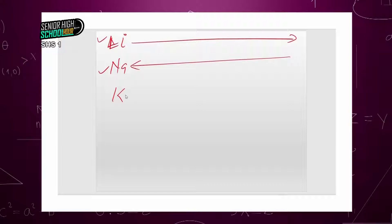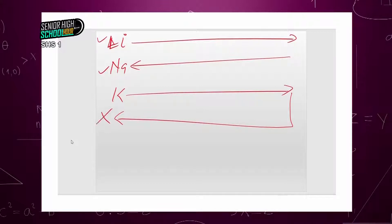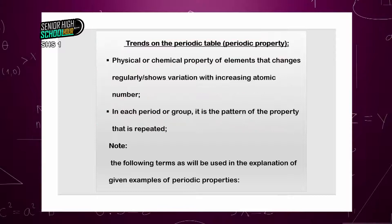It means that if I move from potassium to the last group — group 8 — and I return, whatever element X is here will behave like potassium. So, recurring property is exhibited on the periodic table. We follow up with the trends on the periodic table — that is the periodic property. It is the physical or chemical property of elements that changes regularly or shows variation with increasing atomic number.